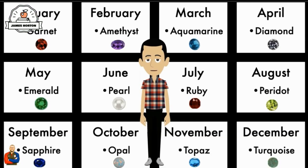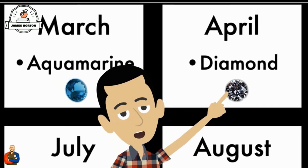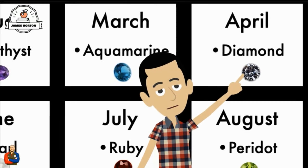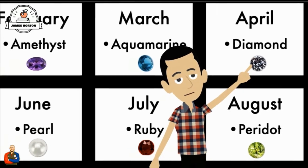You and I have something in common, along with your teacher, your parents, and every other human that has ever been born — we all have birthstones. A birthstone is represented by the month in which you were born. What is your birthstone? Mine's a diamond because I was born in April.